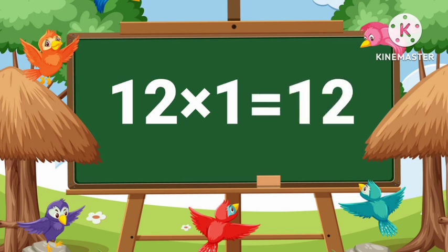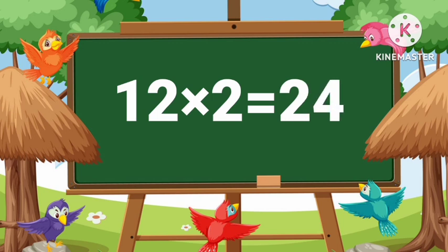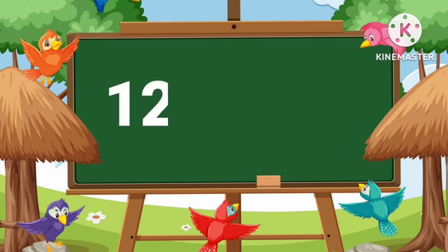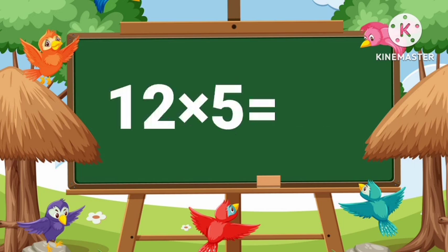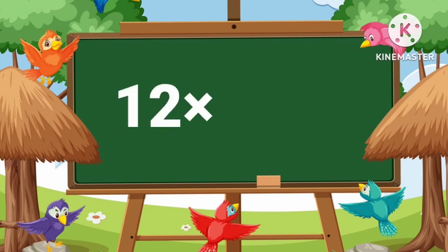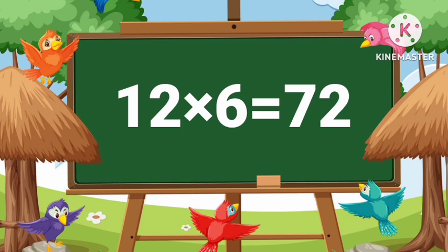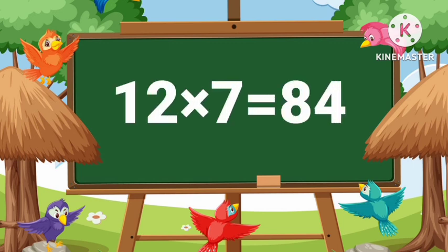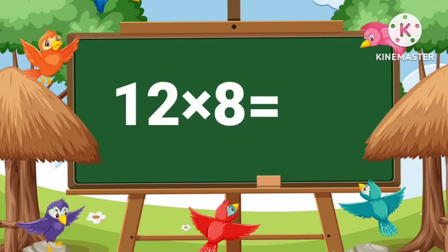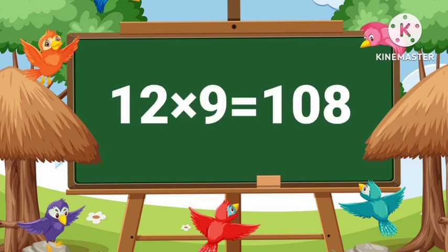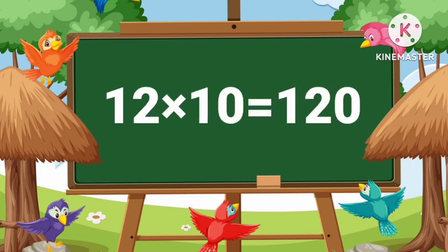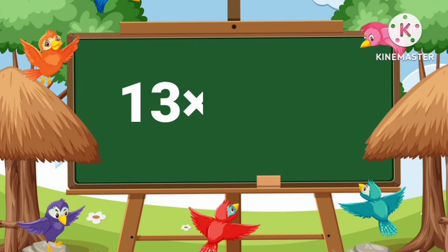Twelve ones are twelve. Twelve twos are twenty-four. Twelve threes are thirty-six. Twelve fours are forty-eight. Twelve fives are sixty. Twelve sixes are seventy-two. Twelve sevens are eighty-four. Twelve eights are ninety-six. Twelve nines are one hundred eight. Twelve tens are one hundred twenty.